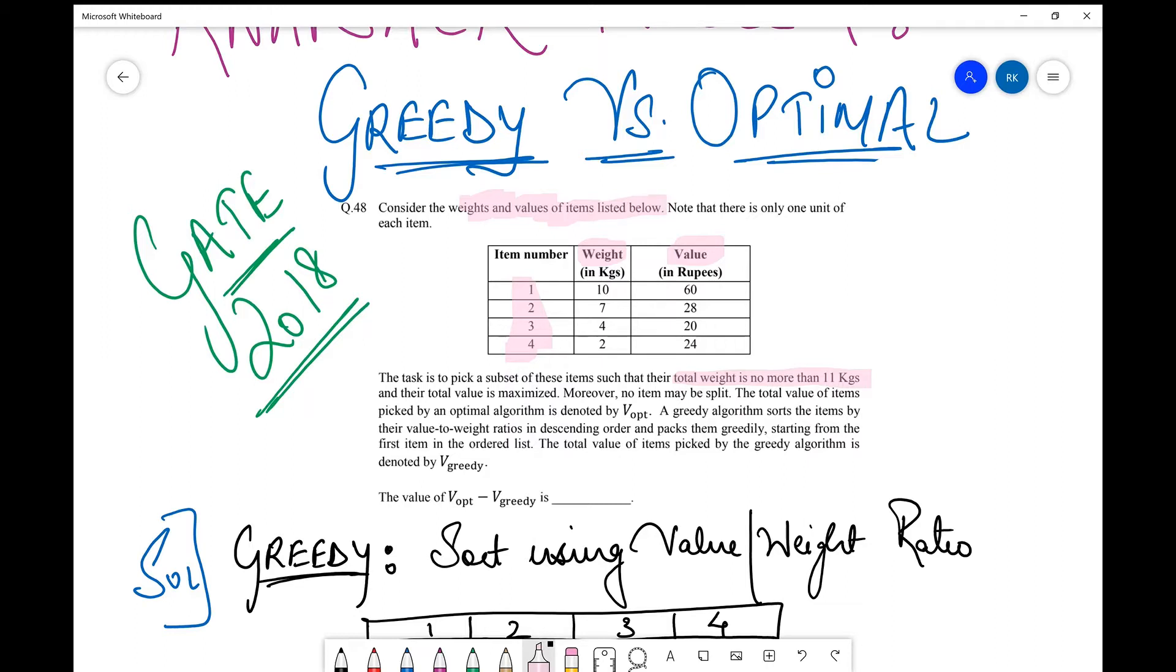So as you had in the knapsack problem, the bag used to be, basically the quantity or the weight that you can put in the bag was fixed. So over here, it is same as 11 kgs. And the total value needs to be maximized. Then moreover, no item may be split. So here they clearly specify that you cannot split the item. So this is not fractional, this is the form of 0-1 knapsack that you had studied.